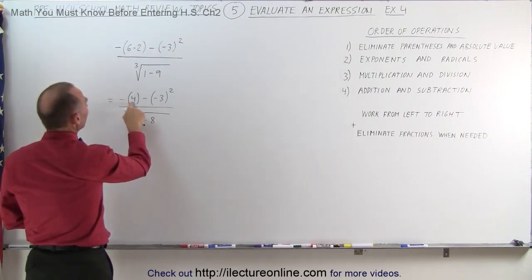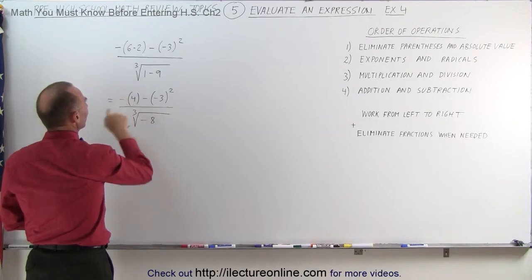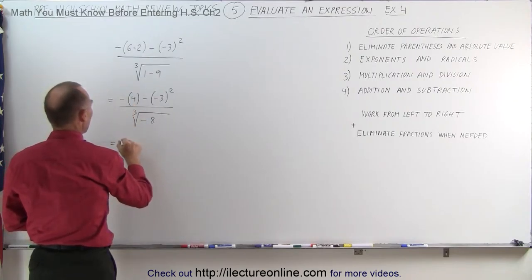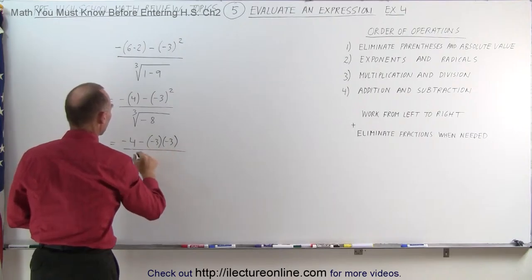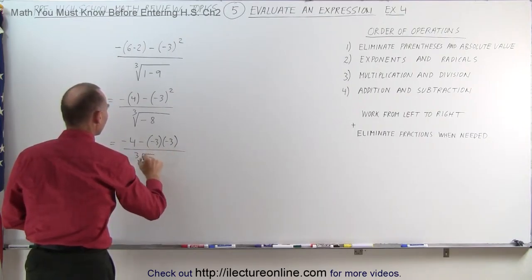Now we can get rid of these parentheses by simply putting the negative in front of the 4. So this is equal to minus 4 minus negative 3 squared, which is negative 3 times negative 3, divided by the cube root of negative 8.